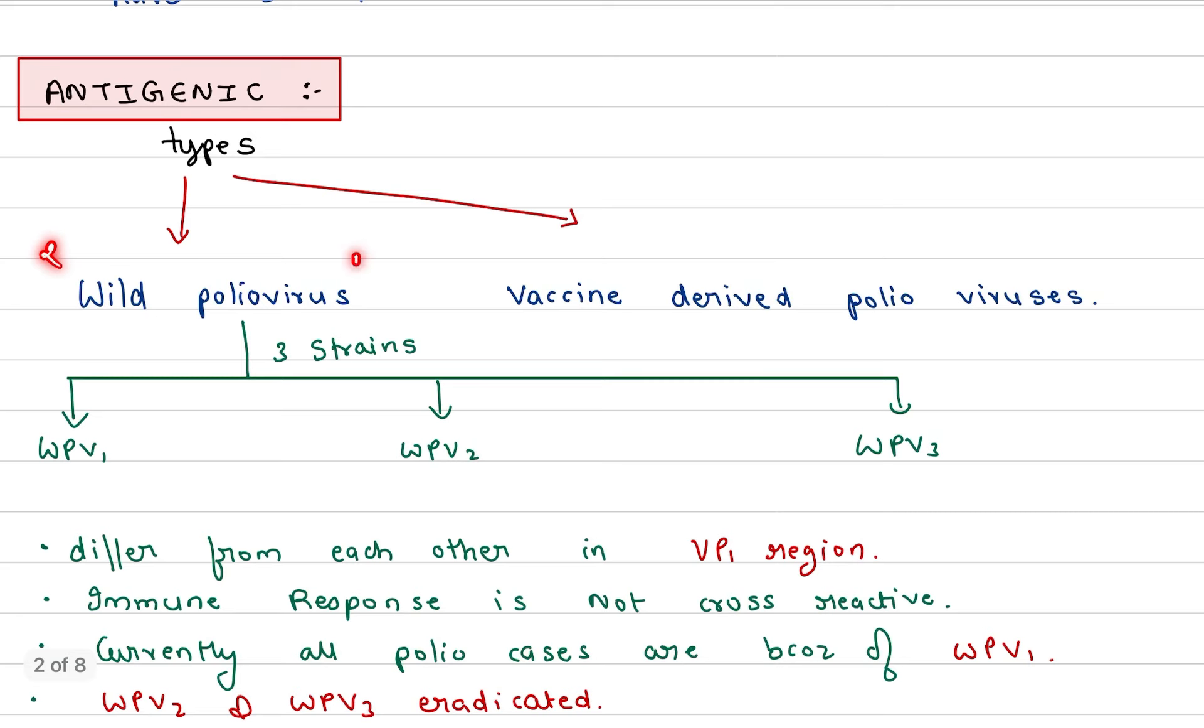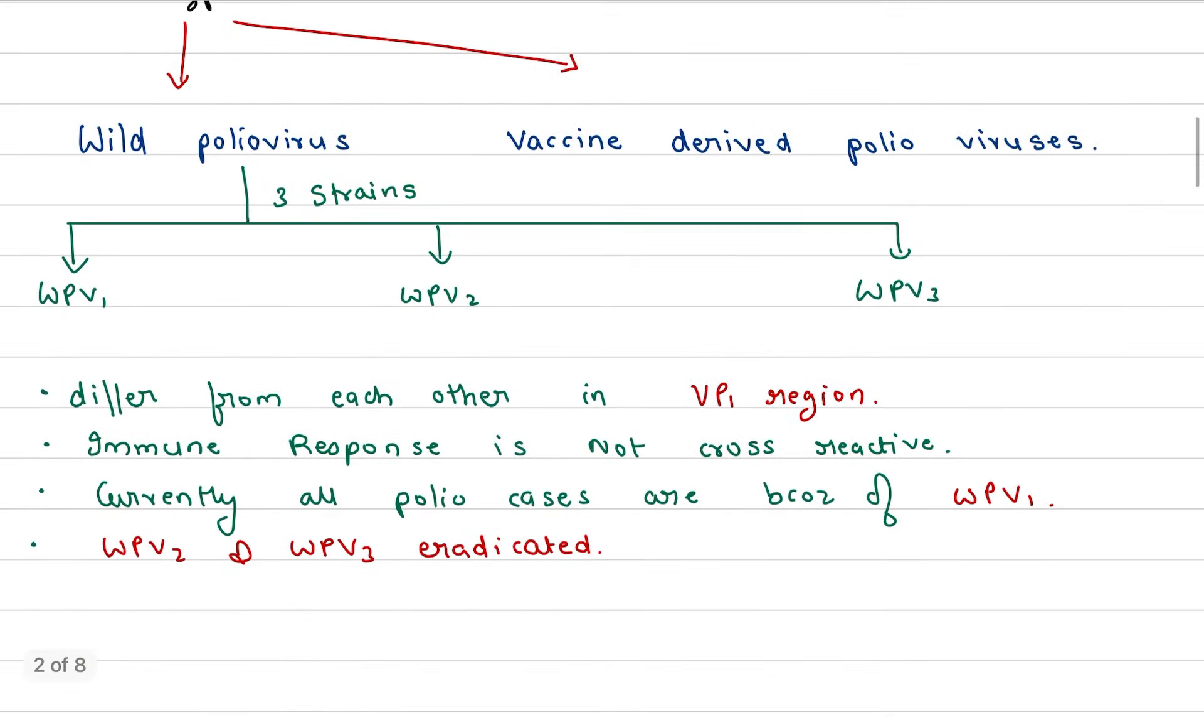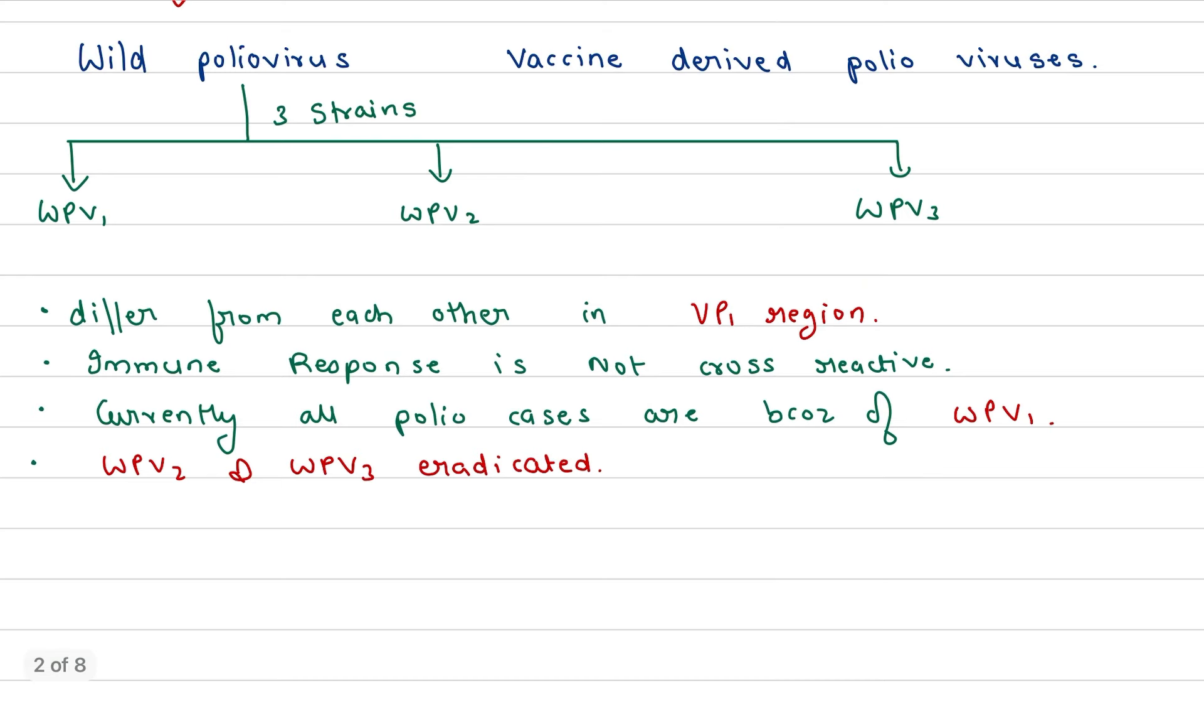Now we are going to talk about antigenic types. There are two types, mainly the wild poliovirus and the vaccine-derived polioviruses. When we talk about the wild poliovirus, there are three strains: WPV1, WPV2, WPV3. These three differ only in the region of VP1. Immune response is not cross-reactive.